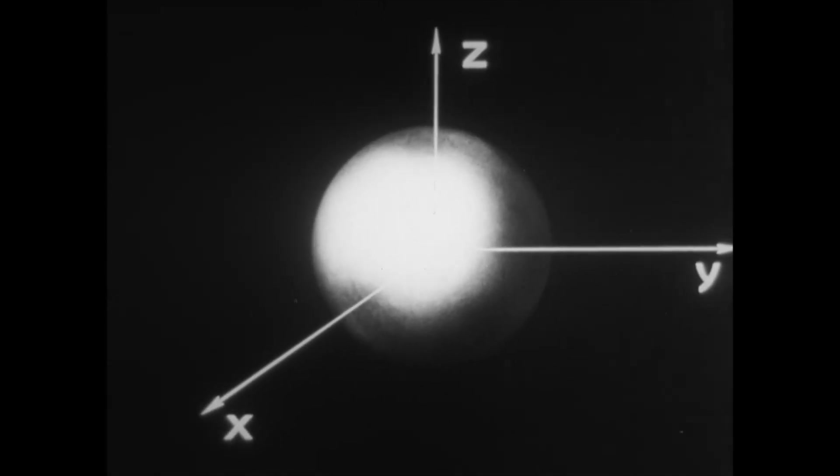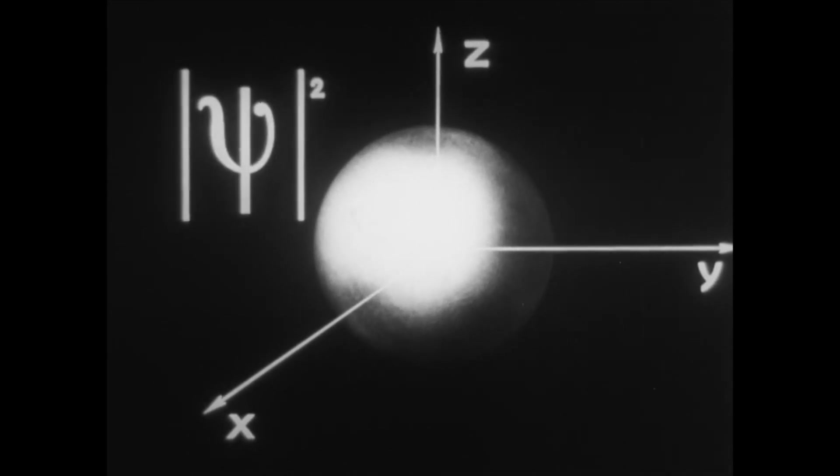The probability of finding the electron in a specific region is determined by the square of the absolute value of the wave function.